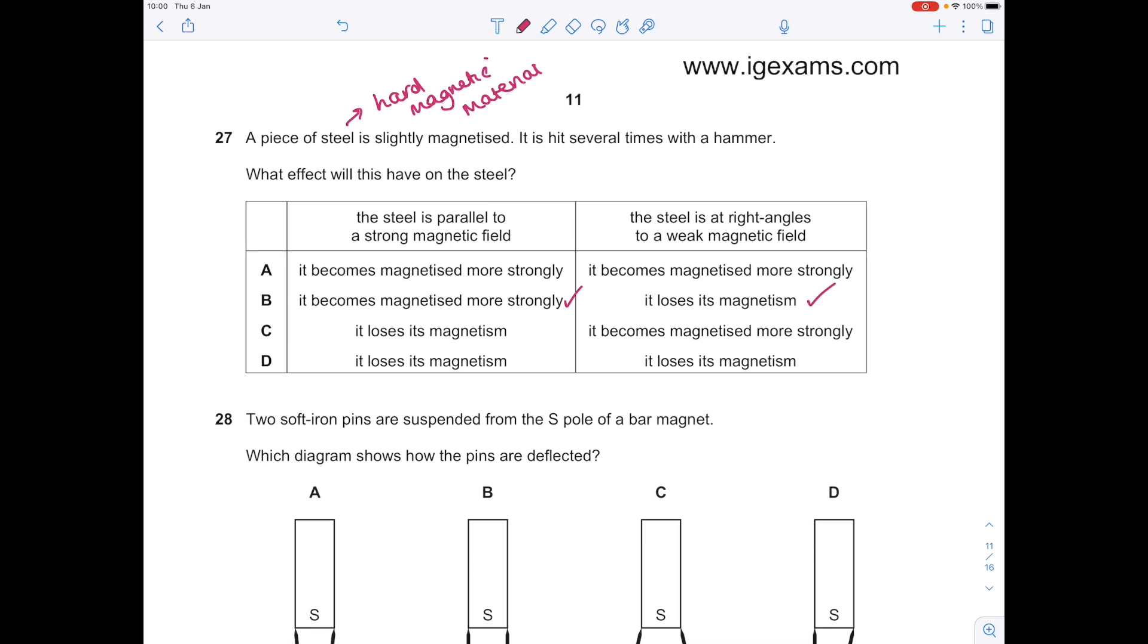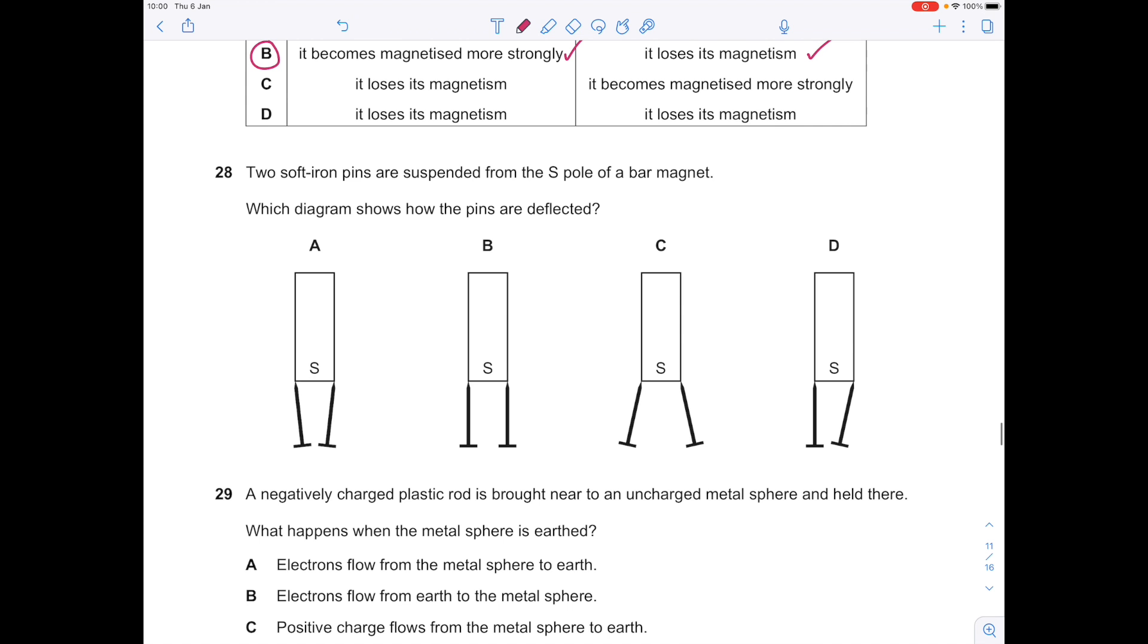And then if you hit it when the steel is at right angles to a weak magnetic field, it will lose its magnetism, so B is the answer. Two soft iron pins are suspended from the south pole of a bar magnet. Which diagram shows how the pins are deflected? This is going to cause the pins to be repelled, which is why C is the answer.